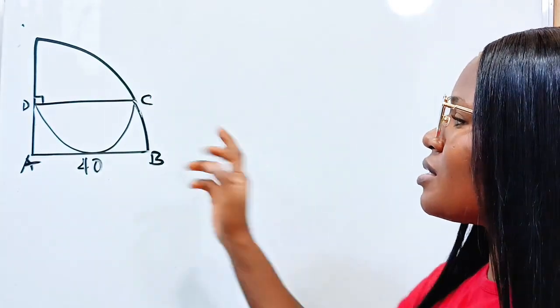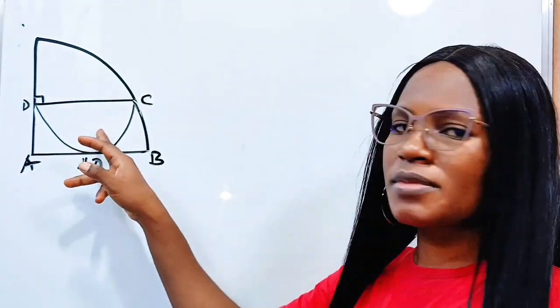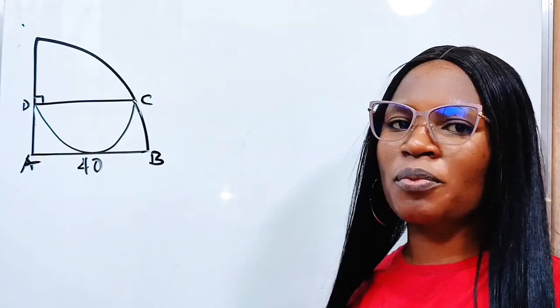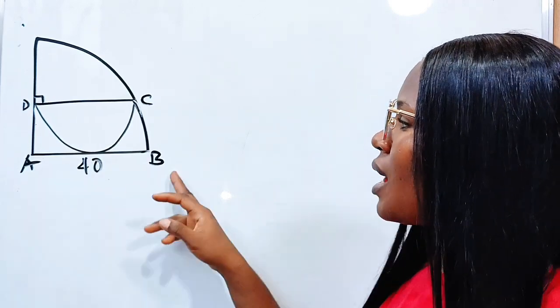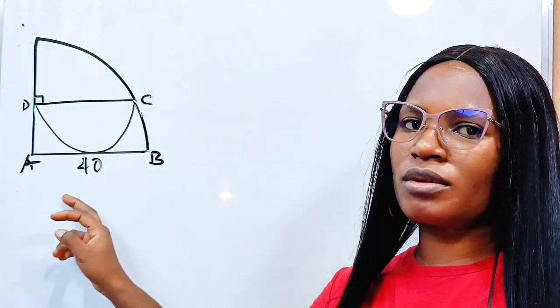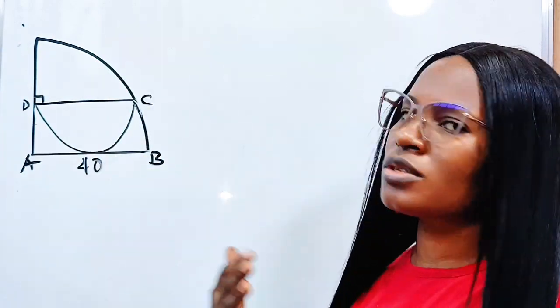Now we are asked to find the area of this semicircle. First of all, we need to interpret that AB is the radius of the quadrant.